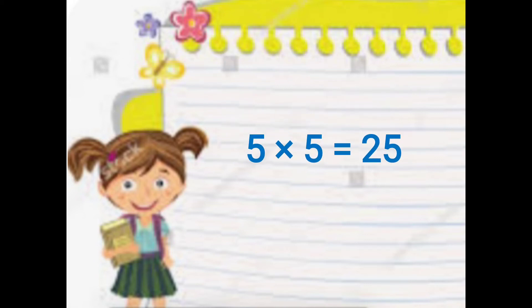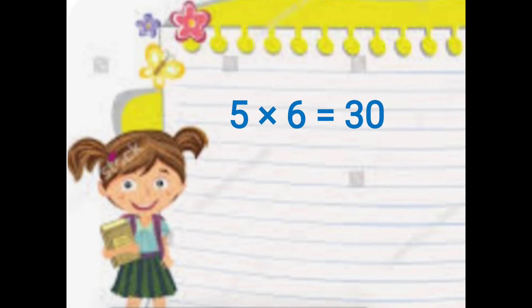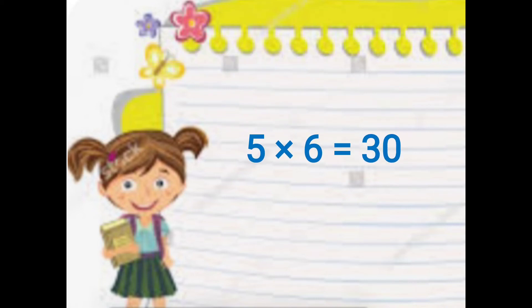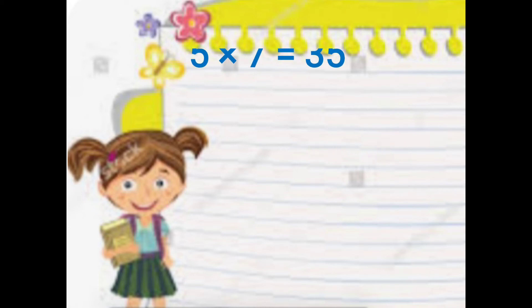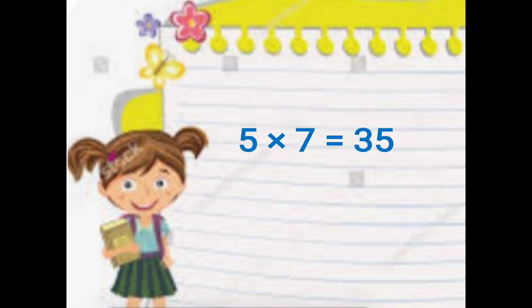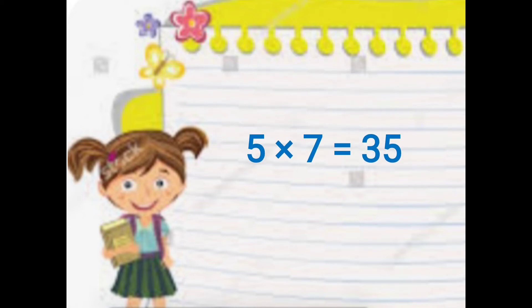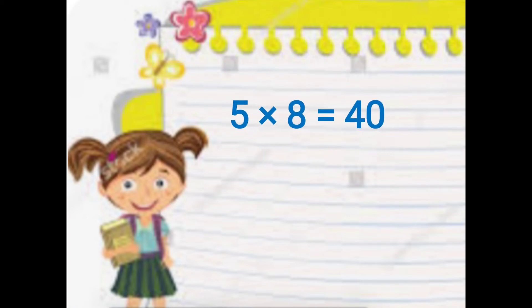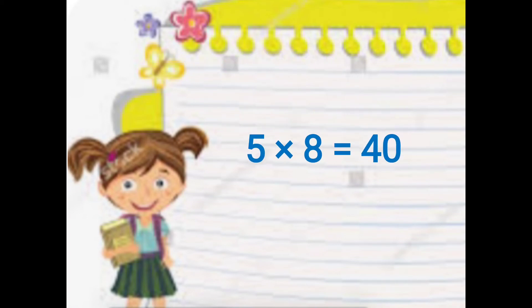5 fives are 25. 5 sixes are 30. 5 sevens are 35. 5 eights are 40.